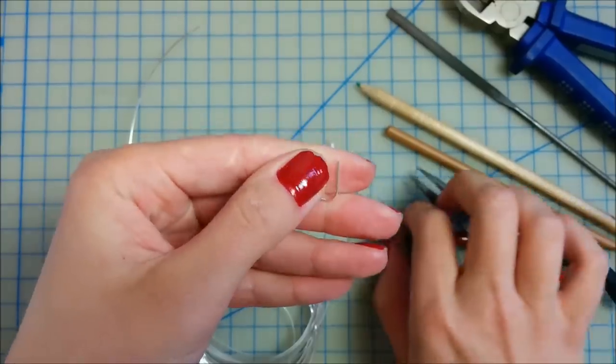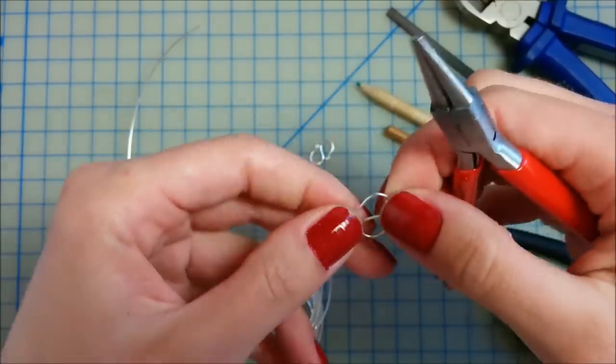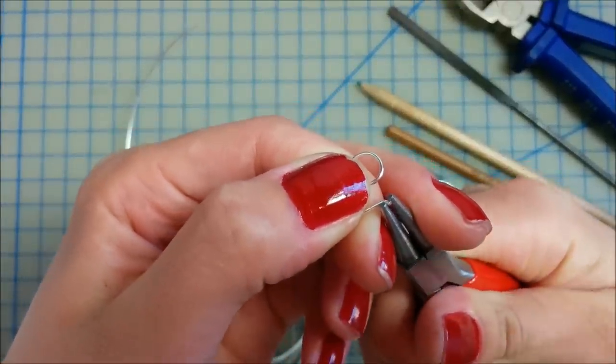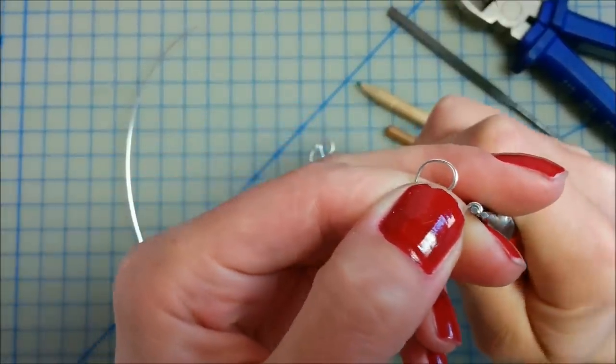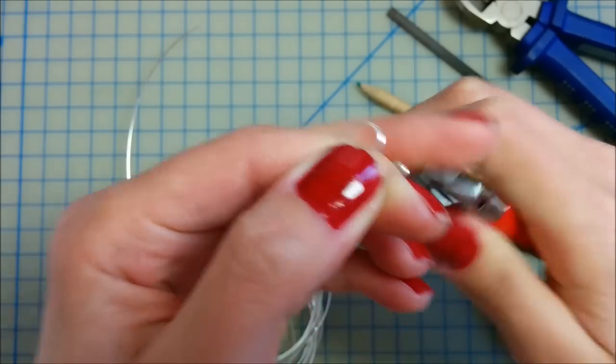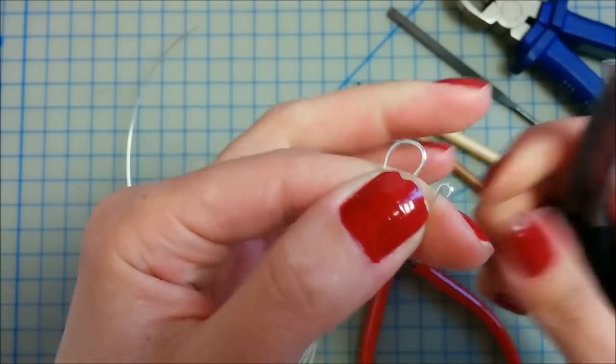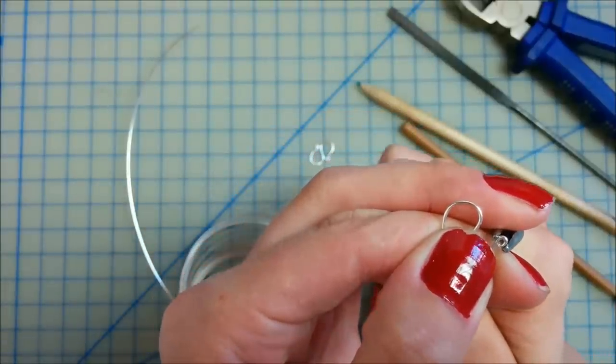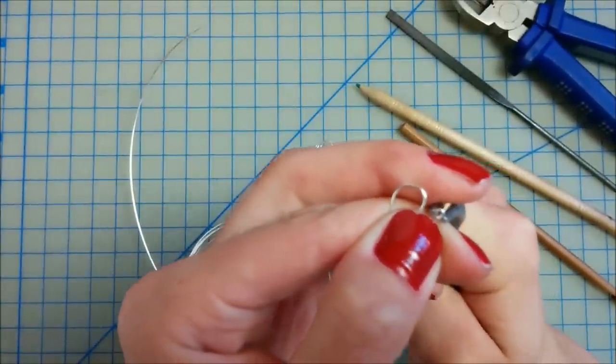Now with the tip of the round nose pliers, make a small curve at the end of the wire. And close with your flat nose pliers, making just a small loop.